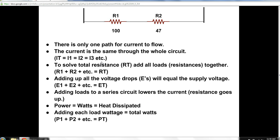Now there's some rules with a series circuit. There's only one path for current to flow. Obviously, current cannot split off anywhere else in this circuit. So the current would be the same through that whole circuit. No matter where I'd measure it, it would be the same value. To solve total resistance, we just add the loads up, the Ohm values.